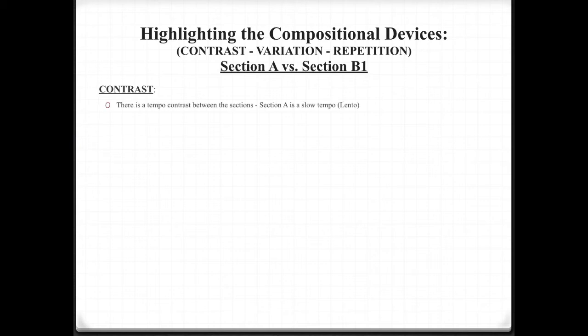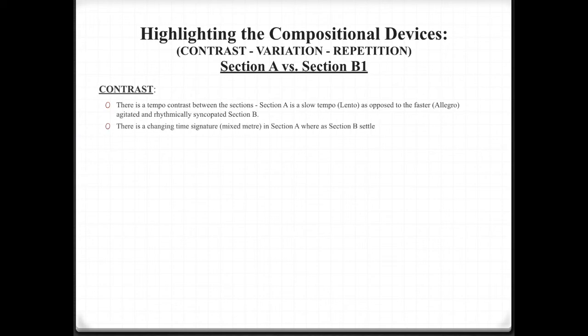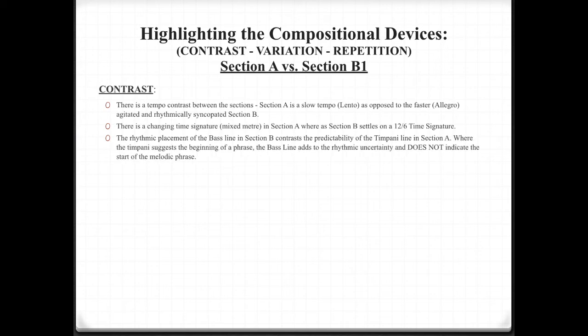So highlighting the compositional devices of contrast, variation, and repetition — section A versus section B1. There is a tempo contrast between the sections: section A is slow tempo, lento, as opposed to the faster, allegro, agitated and rhythmically syncopated section B. There is a change in time signature — mixed metre in section A, whereas section B settles on a single 12/16 time signature. The rhythmic placement of the bass line in section B contrasts the predictability of the timpani line in section A: where the timpani suggests the beginning of a phrase, the bass line adds rhythmic uncertainty.